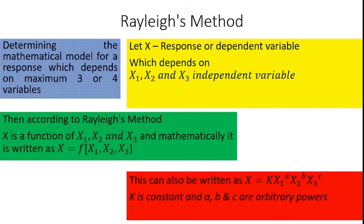Another dimensional analysis method is Rayleigh's method. This method is used to determine the mathematical model for a response that depends on a maximum of 3 or 4 variables. If your experiment has 2 or 3 variables, you can utilize Rayleigh's method.